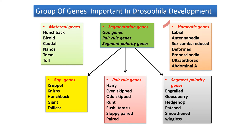Segmentation genes are divided into three categories. Gap genes include Kruppel, NURBS, hunchback, giant, and tailless. Pair rule genes include Hairy, even-skipped, odd-skipped, runt, fushi tarazu, sloppy paired, and paired. Segment polarity genes include Wingless, gooseberry, hedgehog, patched, smoothened, and wingless.